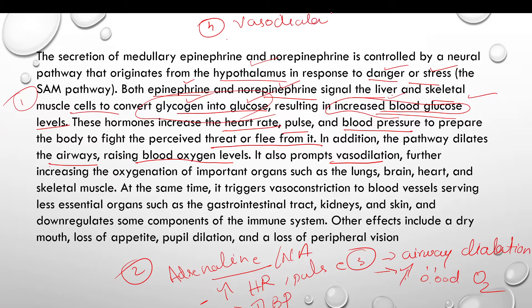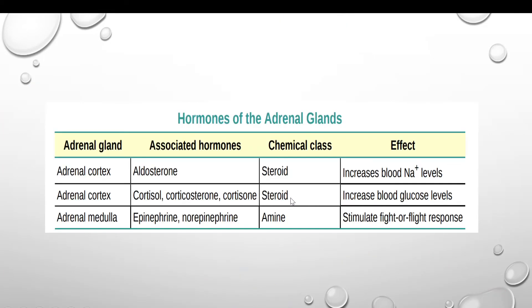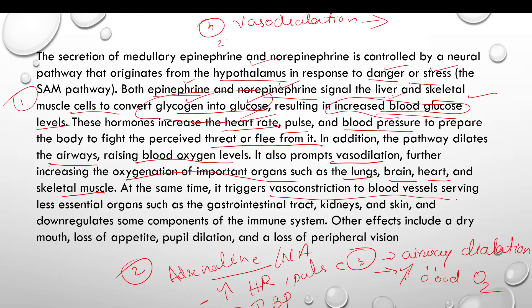In addition, these hormones cause airway dilation — the pathway dilates — which increases oxygen supply in the lungs and blood. Blood vessel dilation (vasodilation) increases the oxygenation of important organs such as the lungs, brain, heart, and skeletal muscles. At the same time, vasoconstriction occurs in blood vessels serving less essential organs such as the gastrointestinal tract, kidneys, and skin.